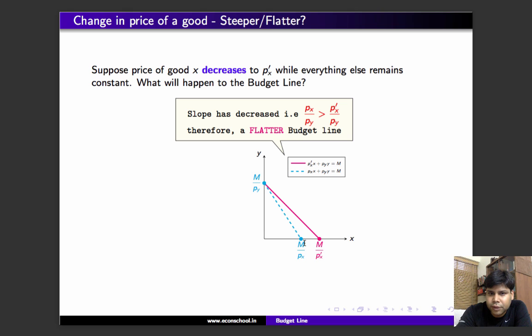The new budget line will now be flatter. Because the price of x has fallen, you can now afford more of x given the same level of income.